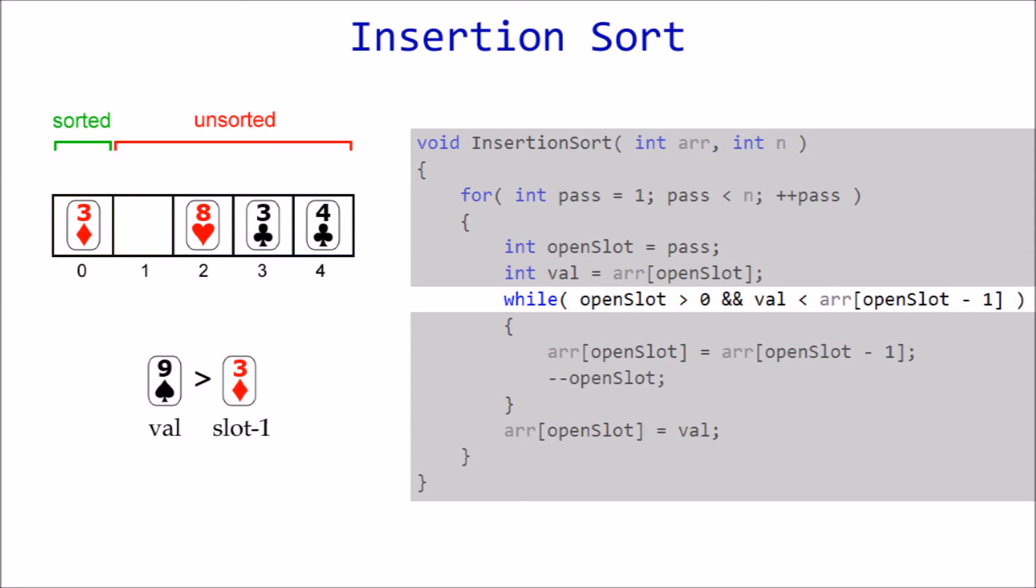This loop will continue to execute while two conditions remain true. 1. There are still more sorted elements to compare against. And 2. Value is less than the element located at slot minus 1. 9 is not less than 3, so we break out of the loop immediately and insert 9 back in the slot.